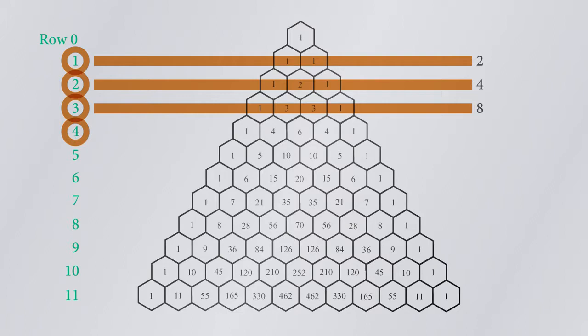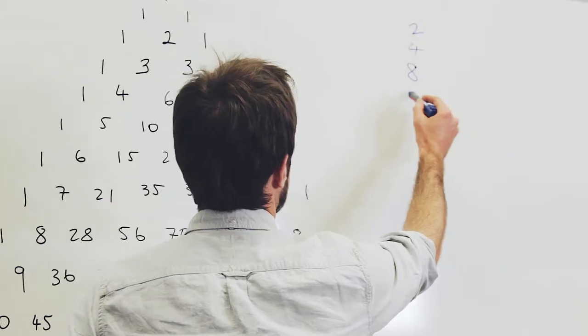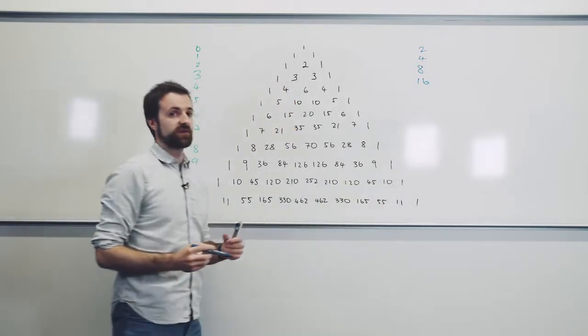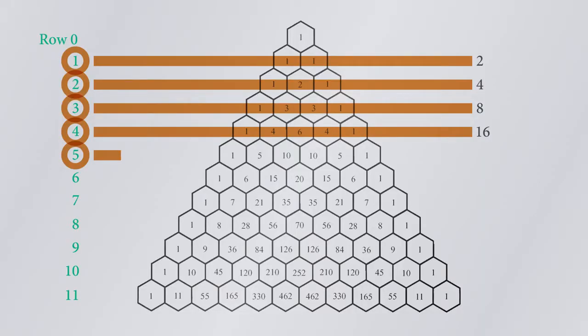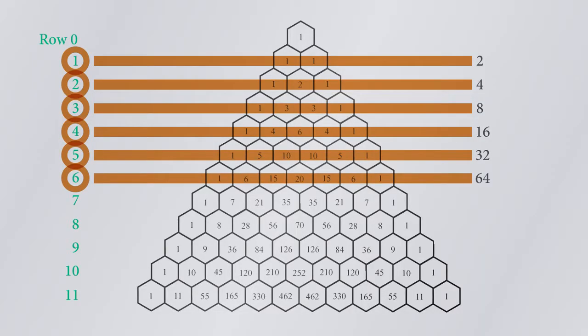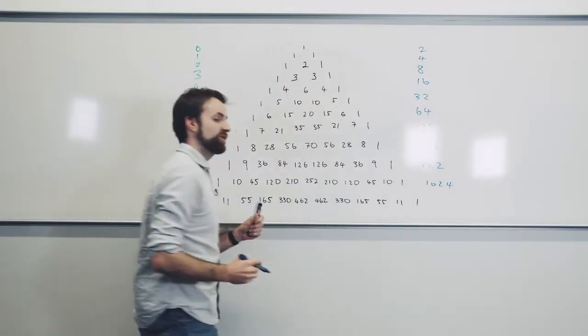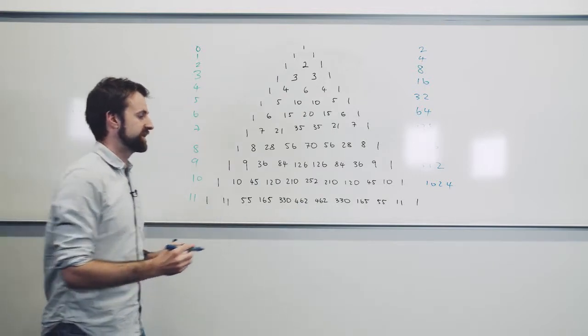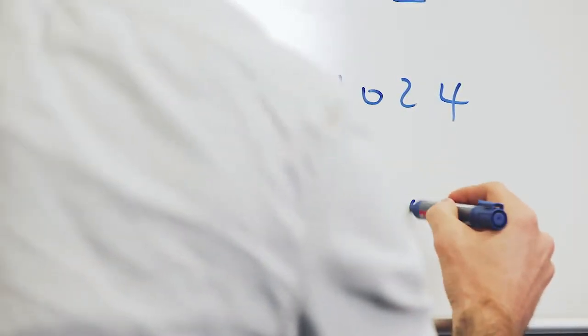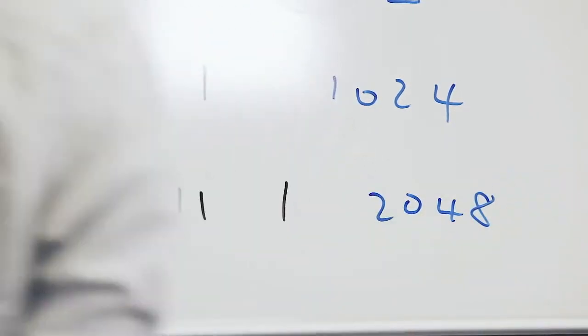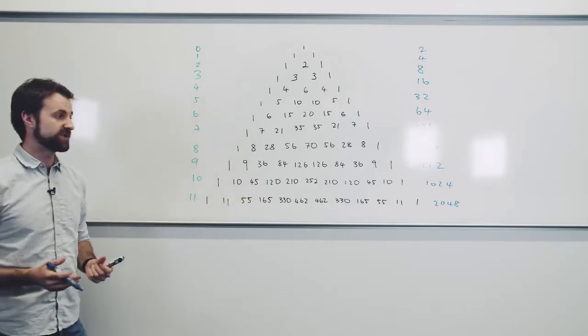Flipping the coin four times, if I add these numbers up, I find that there are sixteen different ways, that's two to the four. Then two to the five: thirty-two, sixty-four ways, one hundred and twenty-eight, two hundred and fifty-six, five hundred and twelve, one thousand and twenty-four. And then by the time we're flipping the coin eleven times, there are actually two thousand and forty-eight different permutations of heads and tails that can come up.